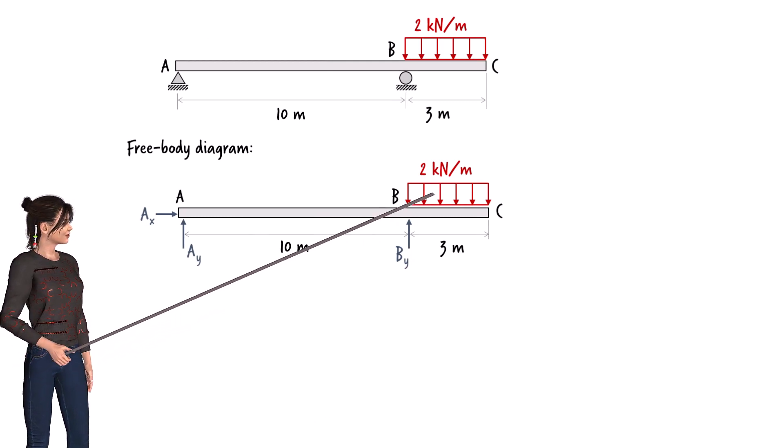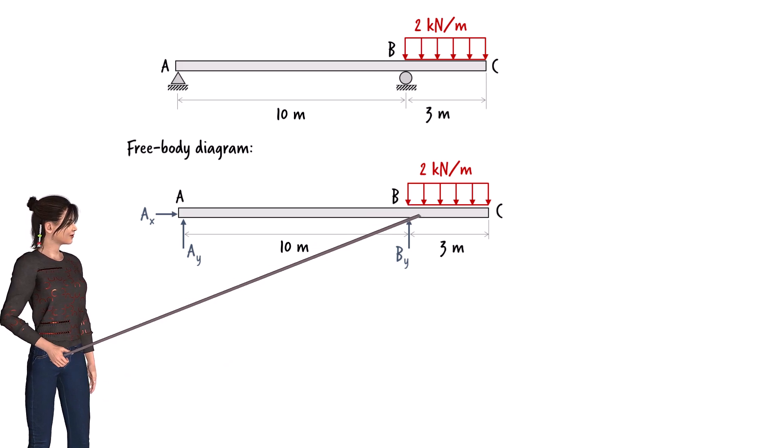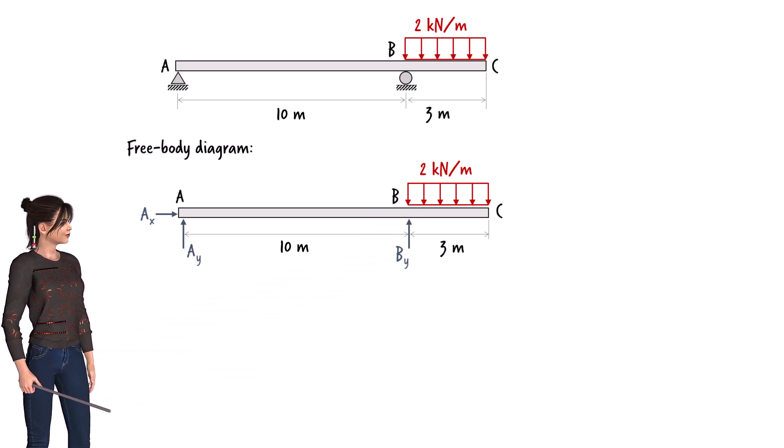Uniformly distributed loads can be viewed as rectangles. The height of such a rectangle represents the intensity of the distributed load. In this case, since the beam is subjected to a uniformly distributed load of 2 kN per meter, the height of the rectangle is 2.